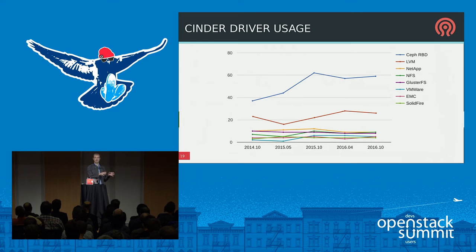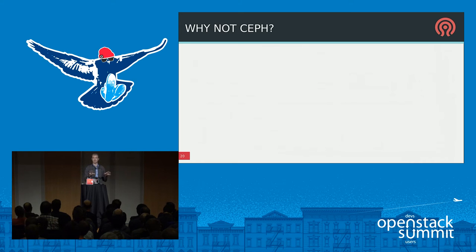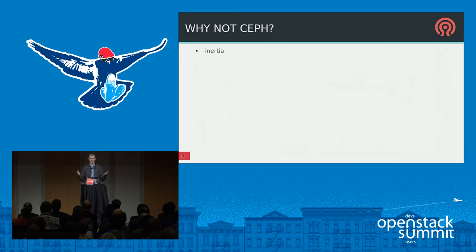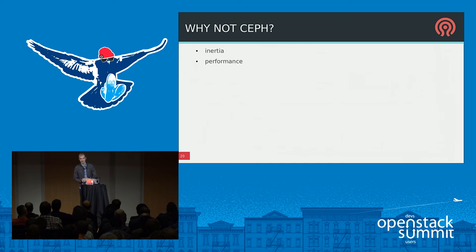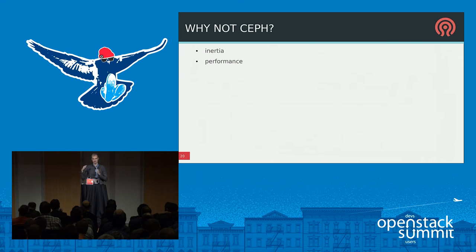Why are people not choosing Ceph? The easiest reason to write off is inertia — people have been buying proprietary appliances for decades and it takes time to change those buying habits. Another reason is performance. Ceph has a reputation for not being as fast as other storage systems, partly due to history — Ceph has gotten much faster over the past several years and some of these opinions are outdated. But there's a kernel of truth: the back-end that Ceph OSDs use to write data to local storage is aging and there's a lot we can do to improve it.